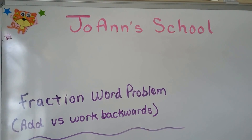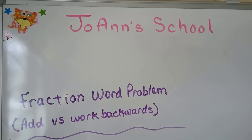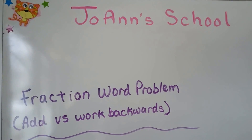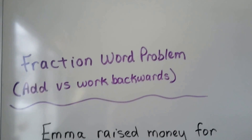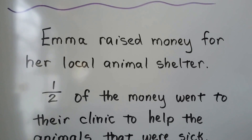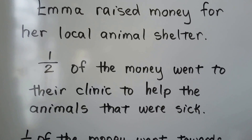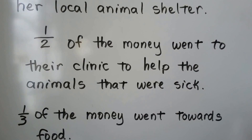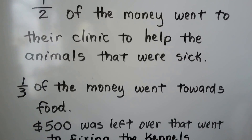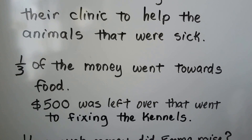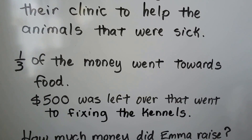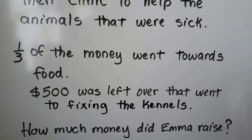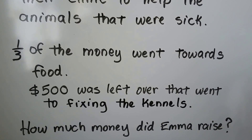I have a fraction word problem for you. We're going to talk about adding fractions versus working backwards to find a total. Emma raised money for her local animal shelter. Half of the money went to their clinic to help the animals that were sick. One-third of the money went towards food. $500 was left over that went to fixing the kennels. How much money did Emma raise?